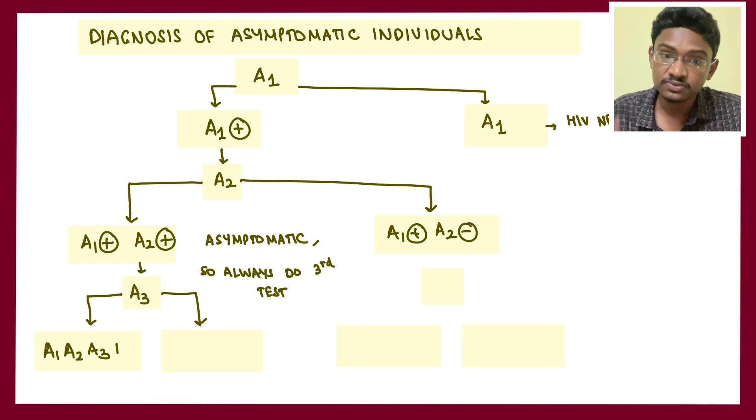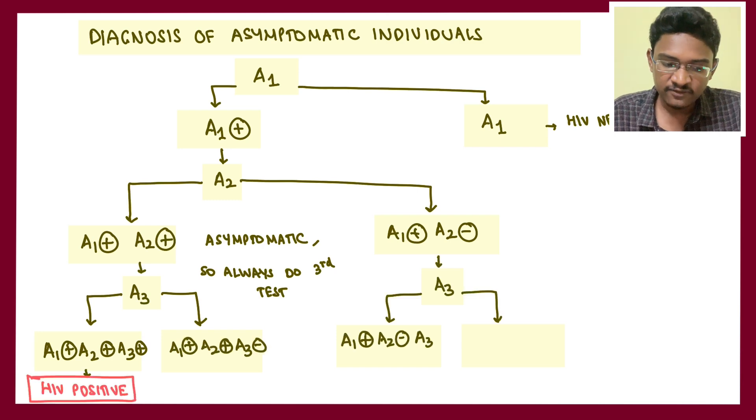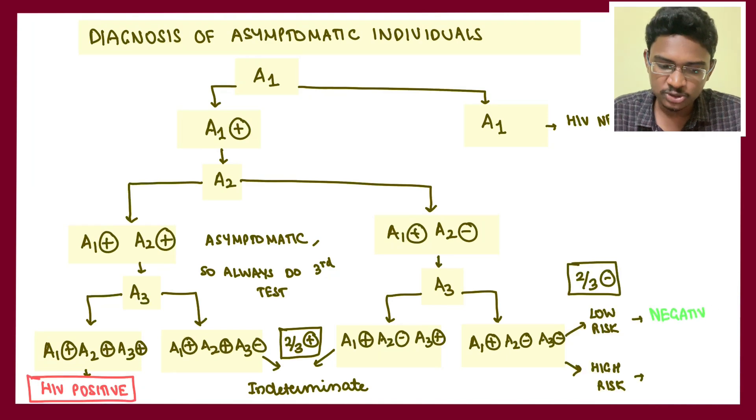If third test also becomes positive, label him as positive. If third test becomes negative, two by three is positive, report as interim indeterminate. If second test is negative and first test is positive, go sequentially for the third test. If third test becomes positive, it's interim indeterminate, repeat after two to three weeks.